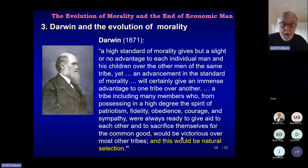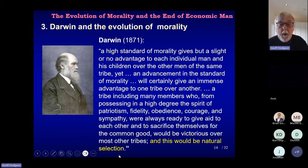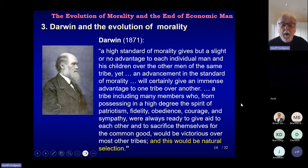I don't need to point out that this is a group selection argument. There's a degree of controversy over it, but David Sloan Wilson's work and others have importantly established the logic behind this kind of argument and revived it from decades of neglect. Darwin here is putting a group selection argument for the evolution of morality — morality grows not because of individual against individual but tribe against tribe, and tribes where there are moral codes would be victorious over other tribes.